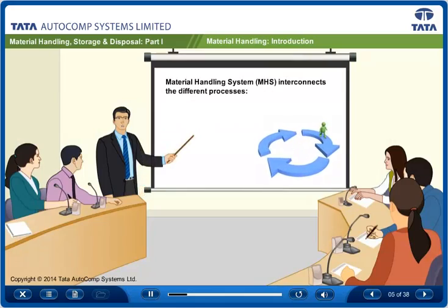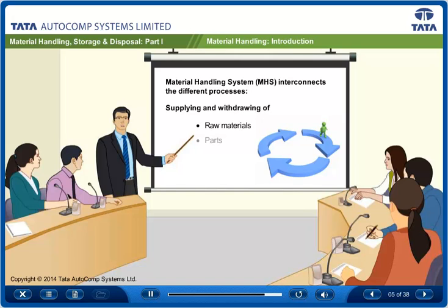The material handling system, or in short MHS, is a fundamental part of a manufacturing system since it interconnects the different processes involved in supplying and withdrawing raw materials, parts and final products.